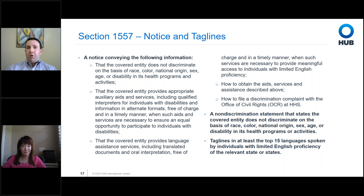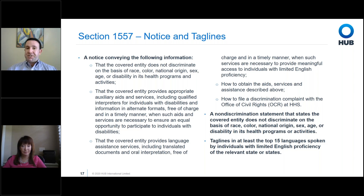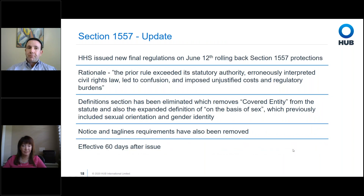Section 1557 required notices and specifically taglines — non-discrimination statements in at least the top 15 languages spoken by individuals with limited English proficiency. Even though Section 1557 is primarily focused on gender and sexual orientation, it also requires communicating to people in a language they can understand. This was quite an onerous process for plans to communicate these non-discrimination provisions in 15 different languages.